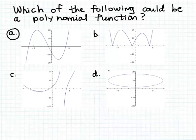And finally D, well D is not even the graph of a function and polynomials are functions. Notice D is not the graph of a function because it's not going to pass the vertical line test. So the only possible graph of a polynomial function amongst these four examples is A.